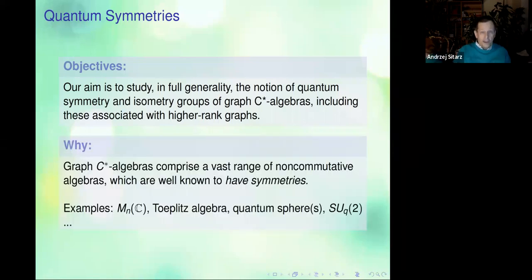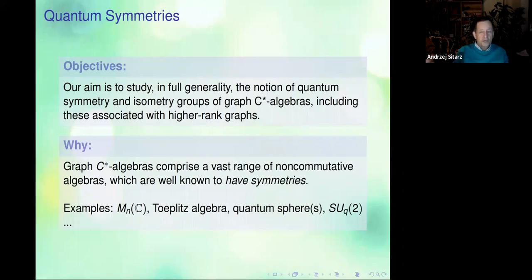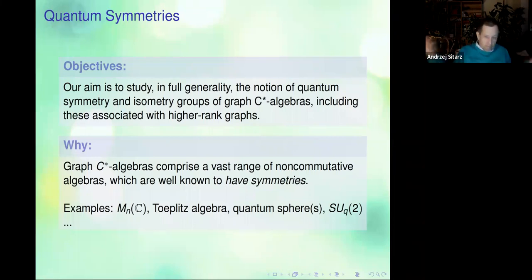Why? When I was asking myself the question, first of all, we have a very nice set of examples of something which are non-commutative topological spaces — graph C*-algebras as non-commutative topological spaces, because we're working with C*-algebras. But we know from the examples that are graph C*-algebras that they have symmetries, and that these symmetries are important.